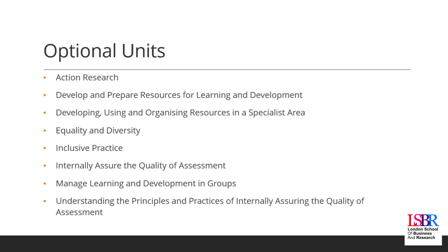There are 18 optional units in total and you can select which units you would like to complete in order to achieve 120 credits. The optional units include: Action Research; Develop and Prepare Resources for Learning and Development; Developing, Using and Organizing Resources in a Specialist Area; and Equality and Diversity.